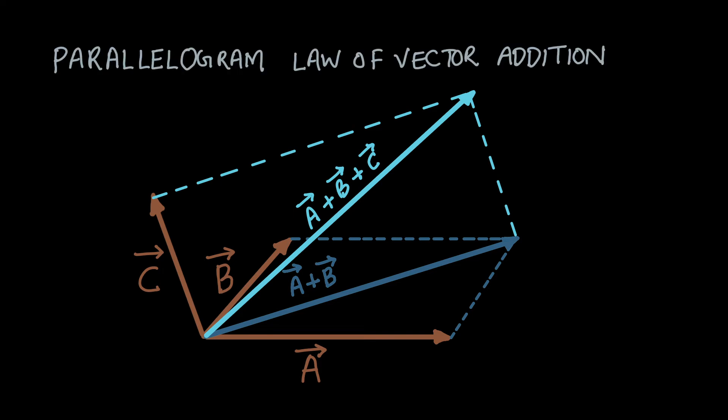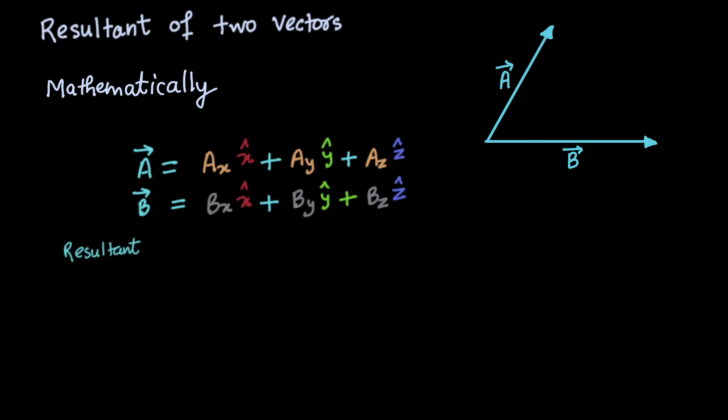Let's find out the magnitude of the resultant vector mathematically. Suppose we have two vectors, a and b. Resultant will be the sum of vectors a and b.